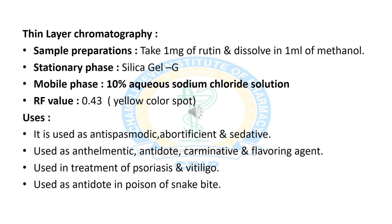Now we will discuss the thin layer chromatography method for analysis of rutin. We prepare a sample solution by taking 1 mg of rutin dissolved in 1 ml of methanol. The stationary phase is silica gel, and the mobile phase is prepared with 10% aqueous sodium chloride solution. We get a yellow color spot on TLC, and the Rf value of rutin is 0.43.